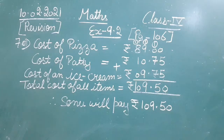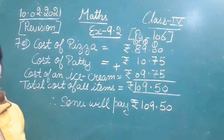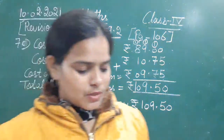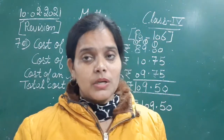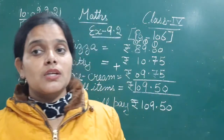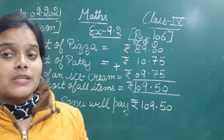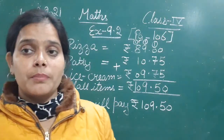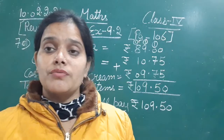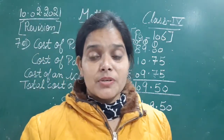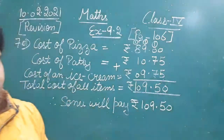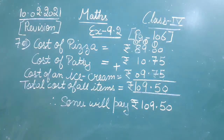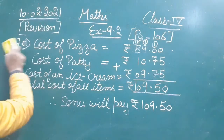This is the last part from sum number 7. In this sum, we have calculated the different amounts that will be paid by different persons for different items they purchased from the restaurant. Now we will move to question number 8.